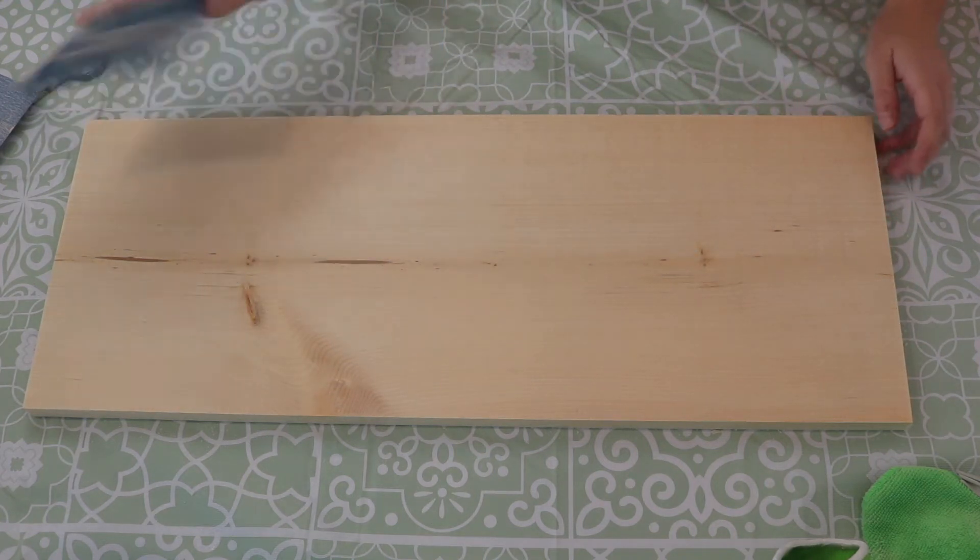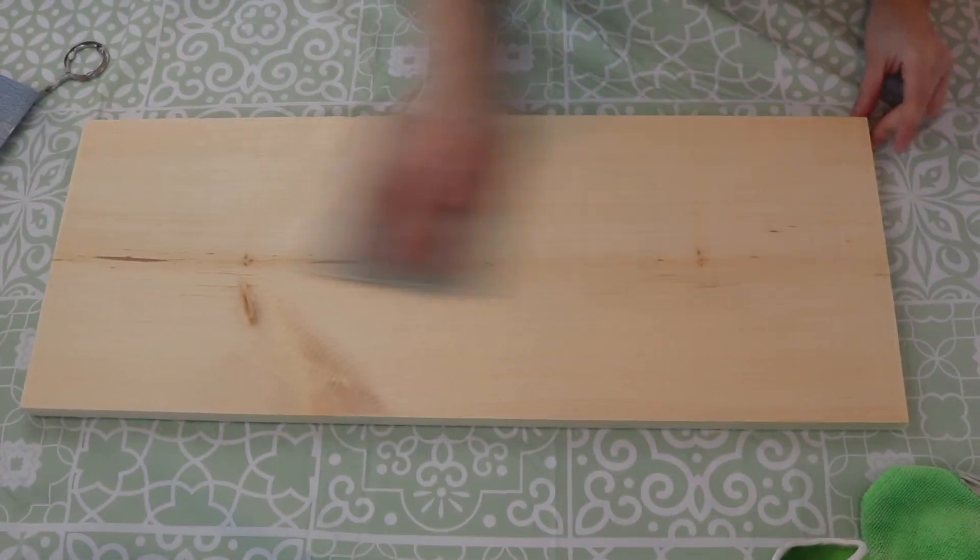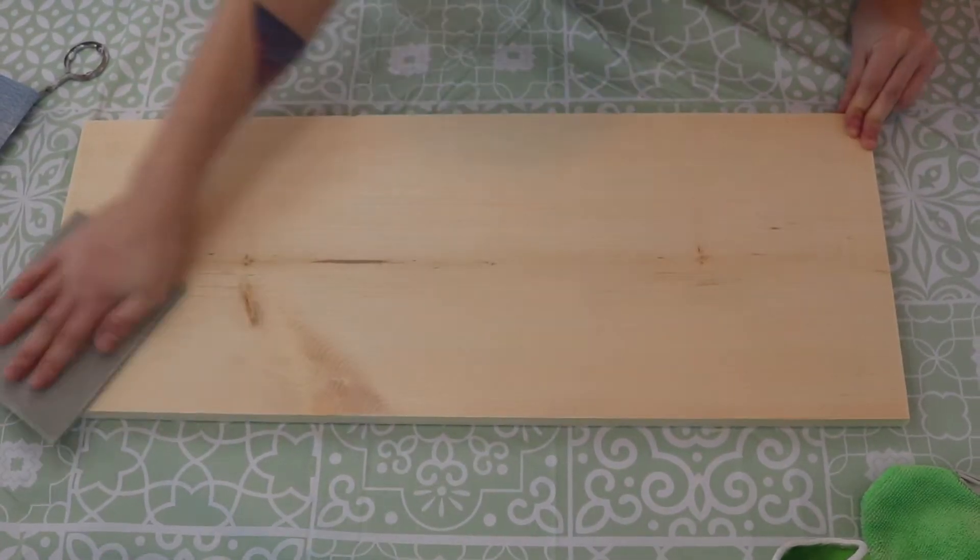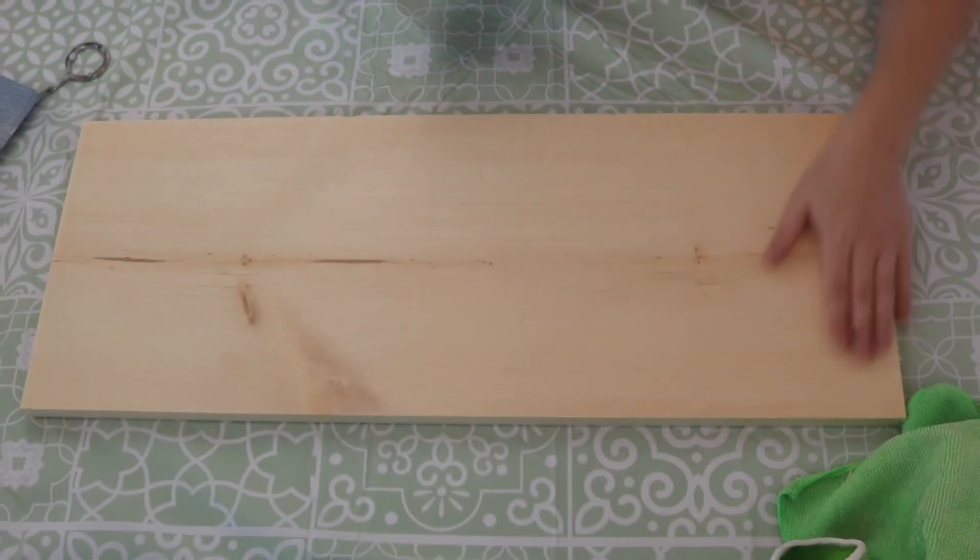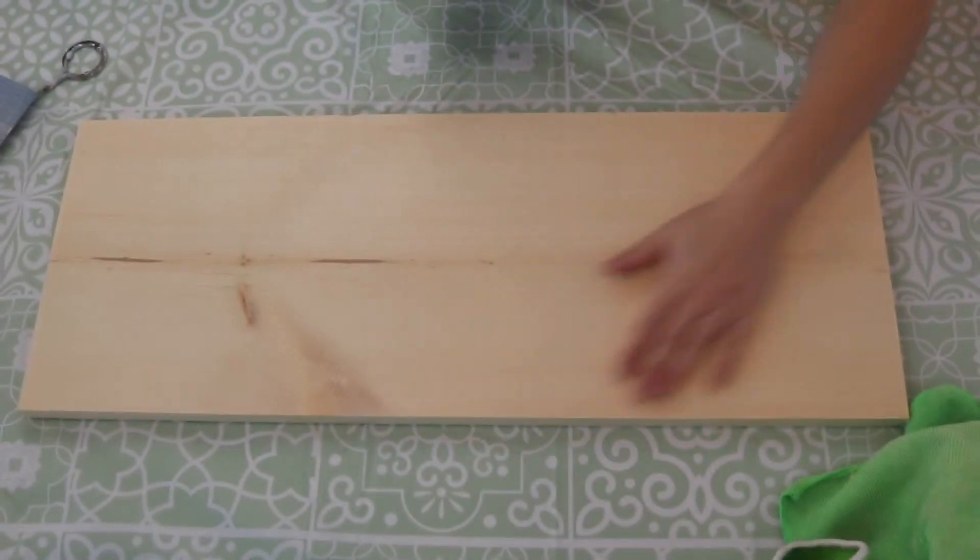This is my 220 grit contour sponge. I will go along the whole thing again. Now you can feel it, and it's nice and smooth.